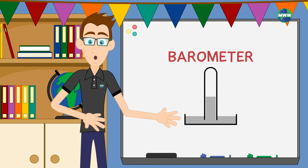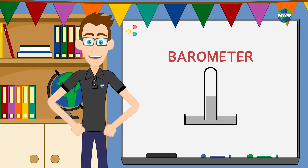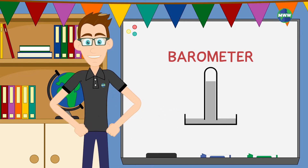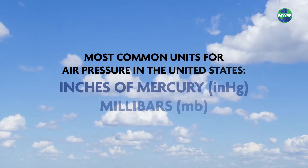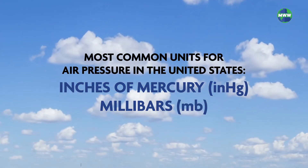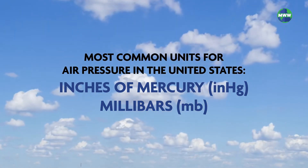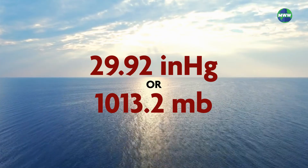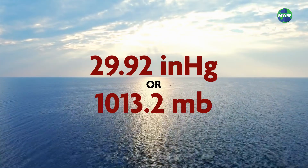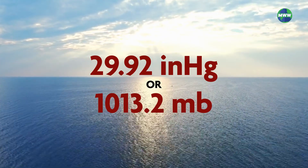Air pressure is measured using a tool called a barometer. A barometer is a column of mercury in a glass tube that rises or falls as the weight, or force, of the atmosphere changes. The two most common units for air pressure in the United States are inches of mercury and millibars. At sea level, standard air pressure is 29.92 inches of mercury or 1013.2 millibars.